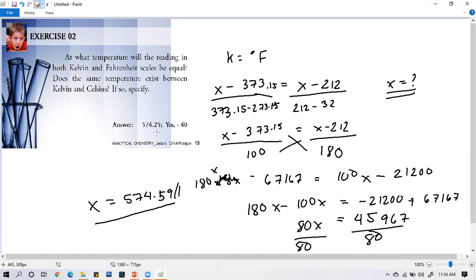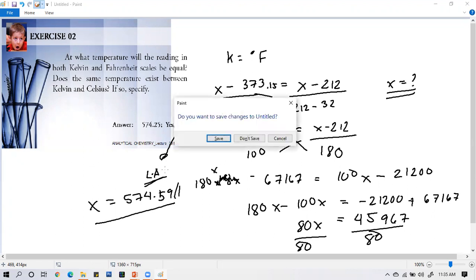We didn't match exactly here, but the point is you find the difference in the values to calculate. For your assignment, find the negative 40 - that's the same temperature between Kelvin and Celsius. That will be your learning activity. Don't solve that problem until it's officially posted in Google Classroom. Let's go to problem number 3. Take a screenshot so we can proceed to Exercise 3.